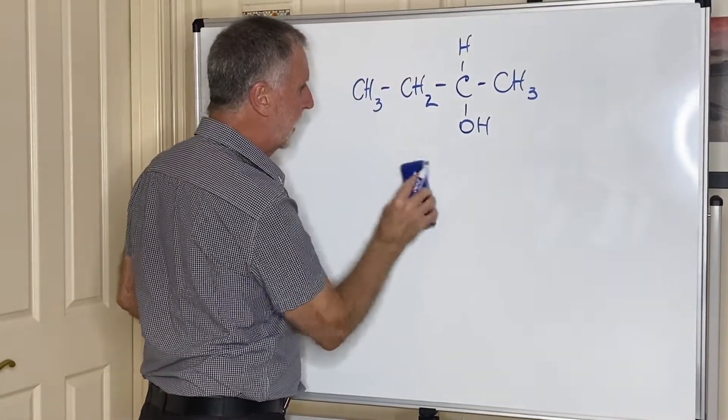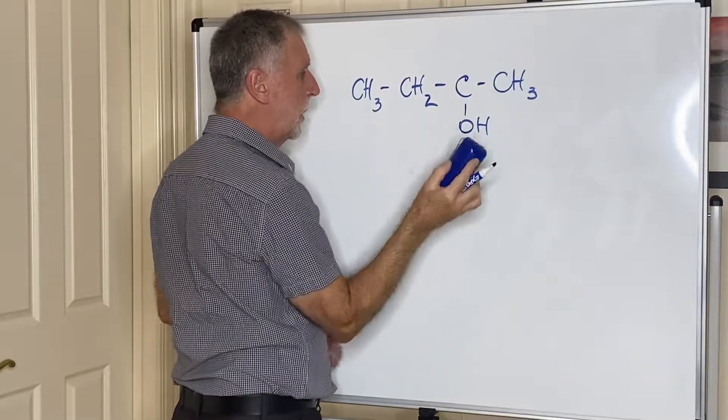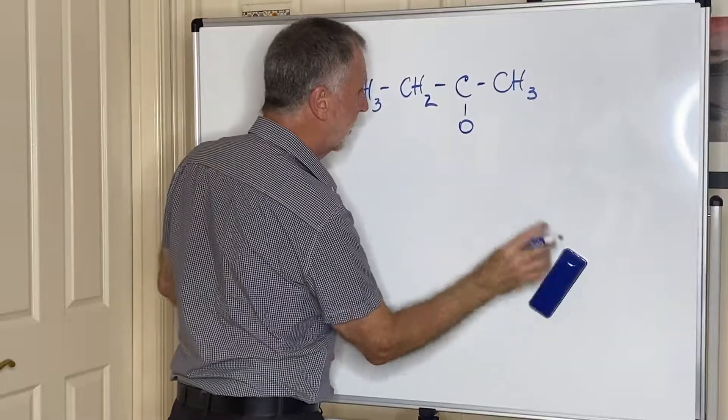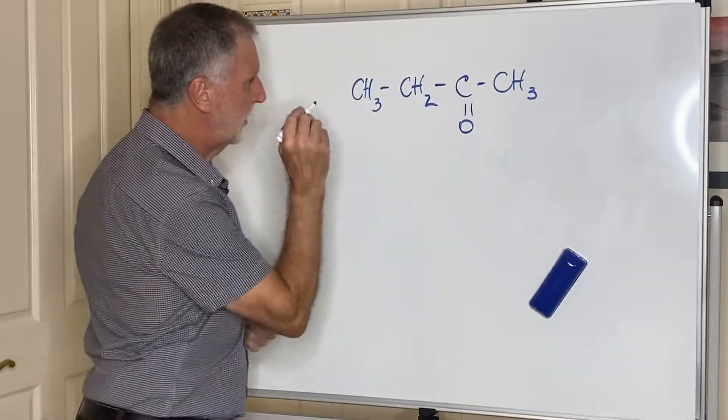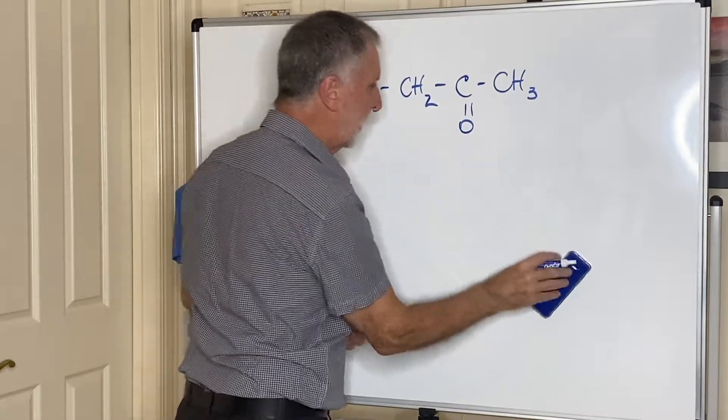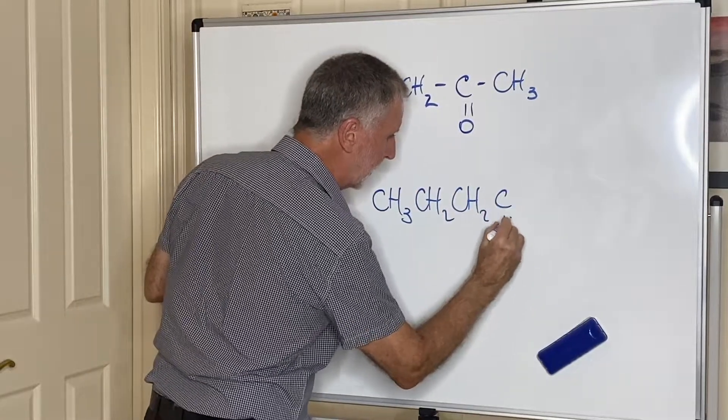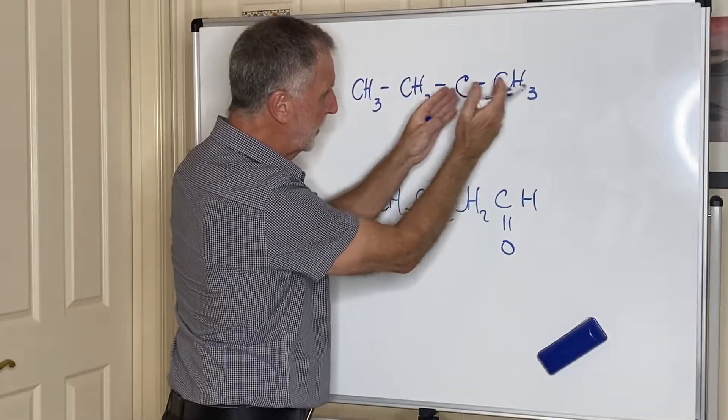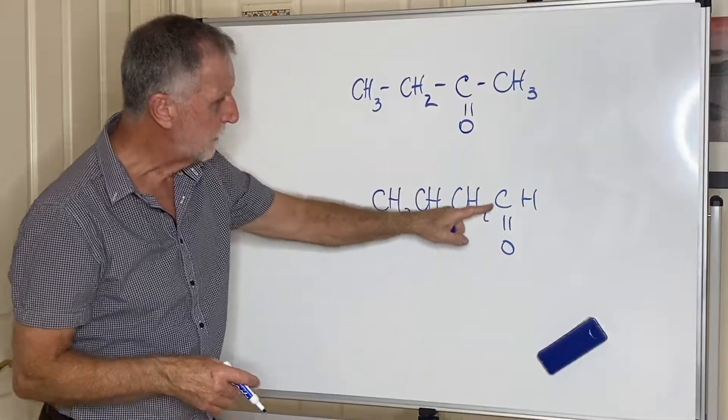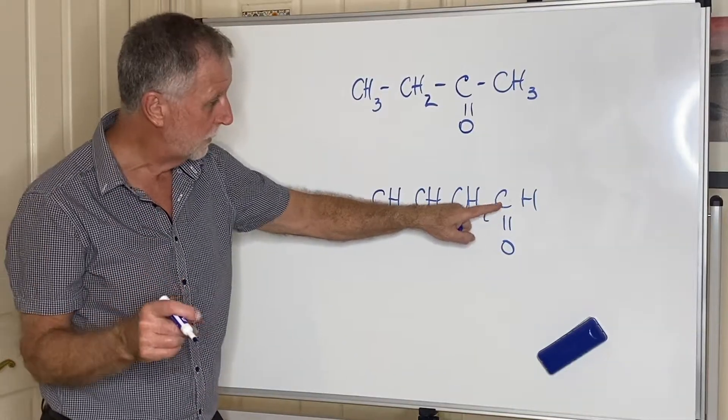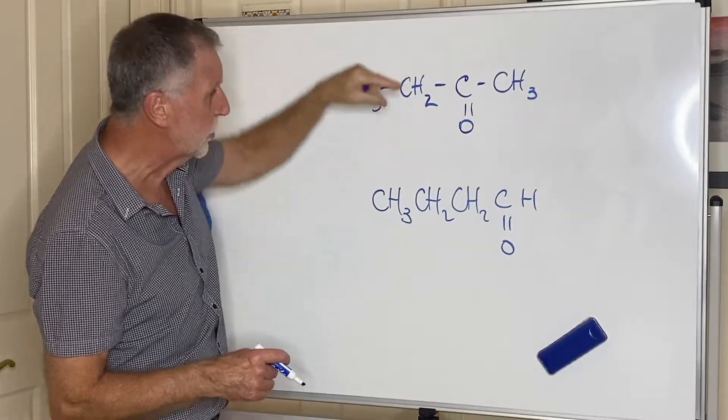The next functional groups are the aldehydes and the ketones. The aldehyde or the ketone contains a carbon double bond O, it's called a carbonyl group. This is a ketone. If you put the double bond over there, what we've now got is an aldehyde. The carbonyl group, the C=O, if it's the final carbon is an aldehyde, and if it's somewhere in the middle of the chain it's a ketone.